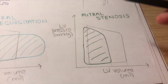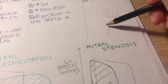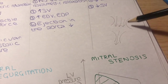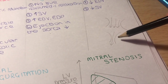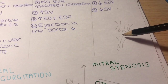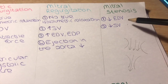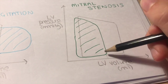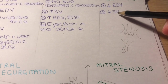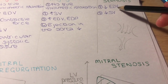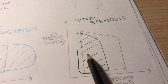Lastly, mitral stenosis — this is what the pressure-volume loop looks like in mitral stenosis compared to normal. Mitral stenosis is a narrowing of the mitral valve; it is not able to open completely, so less blood can pass from the atrium to the ventricle. As a result, you get a decreased end diastolic volume because less blood is able to enter the left ventricle. By Frank-Starling's mechanism, a decreased end diastolic volume also results in a decreased stroke volume, shown by the loop being narrower than normal.